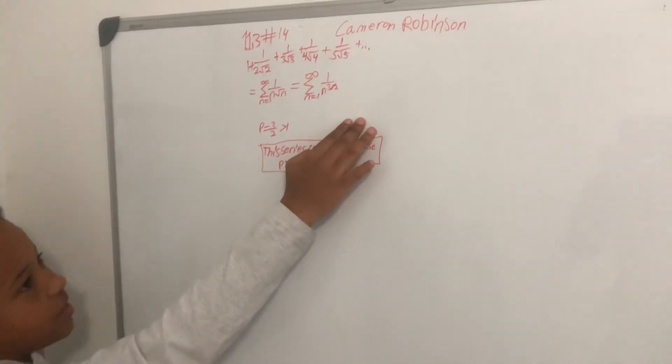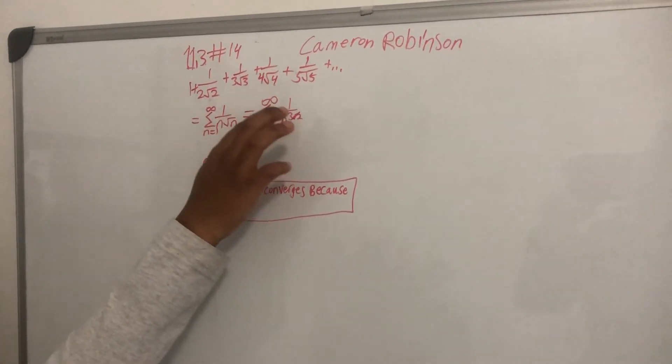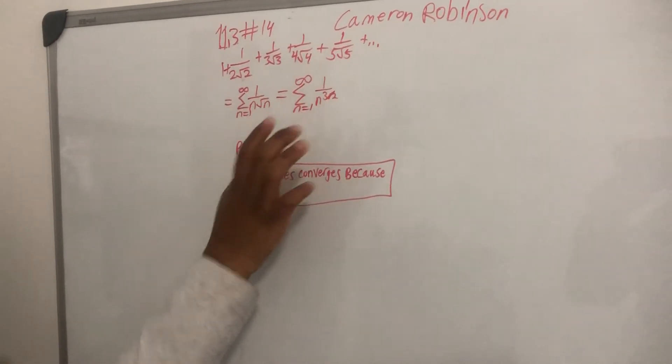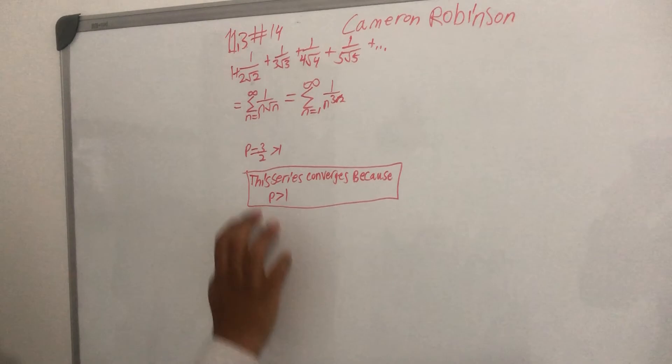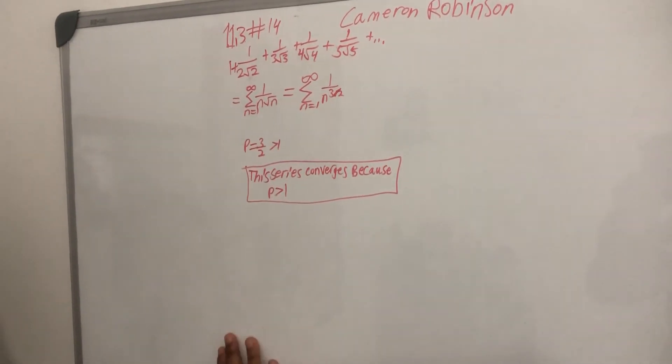We can use that same rule here where the series from n equals 1 to infinity of 1 over n squared over n is equal to the series from n equals 1 to infinity of 1 over n to the 3 halves.